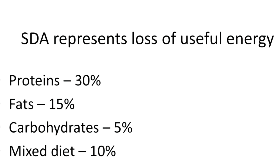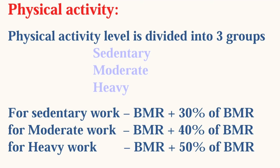The third component of energy requirement is physical activity, classified into sedentary, moderate, and heavy. For a sedentary worker with a BMR of 1000 kilocalories, an additional 30% of BMR (300 kilocalories) is added, giving a total of 1300 kilocalories. For moderate work, 40% of BMR is added; for heavy work, 50% of BMR is added to the BMR value.